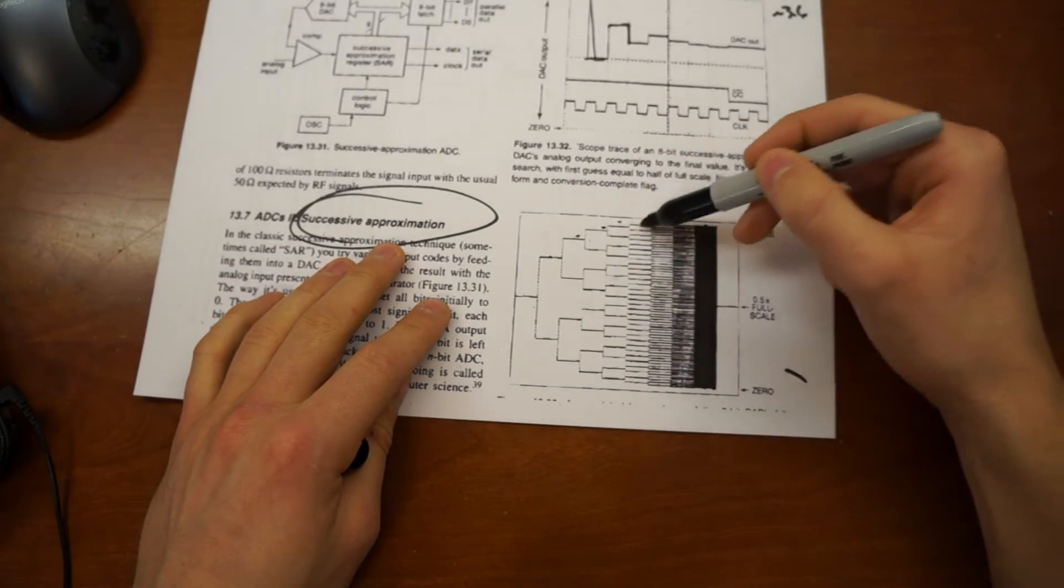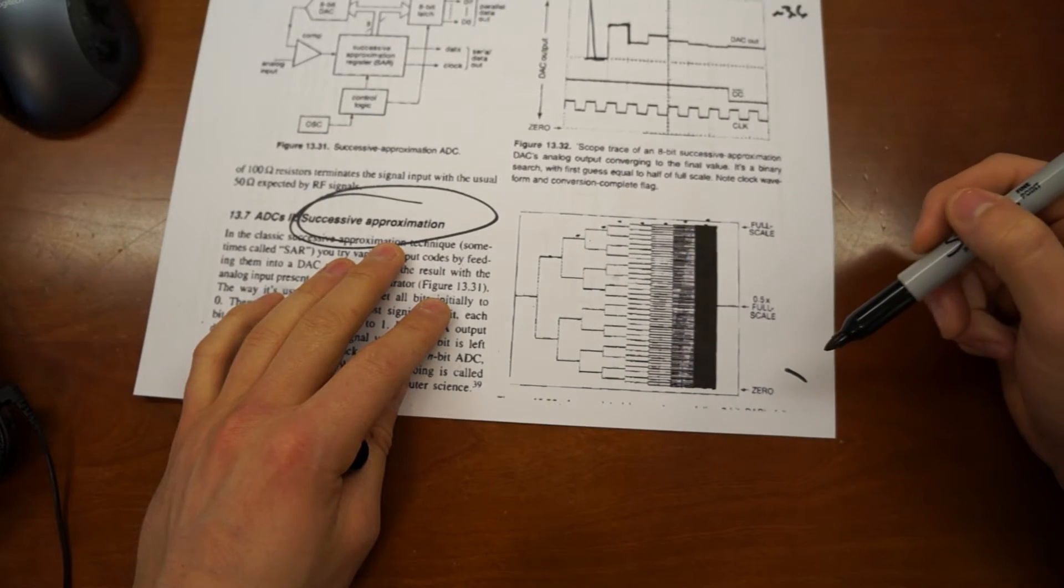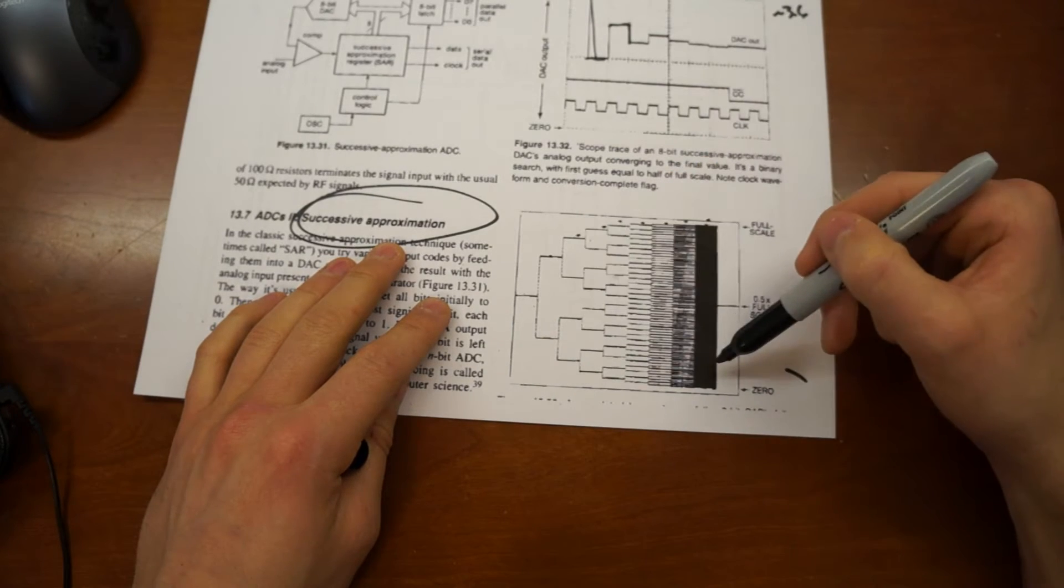Basically, this is a 1, 2, 3, 4, 5, 6, 7, 8-bit. There's eight divisions here.